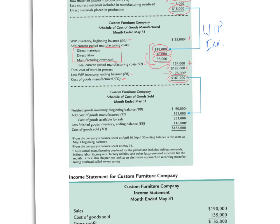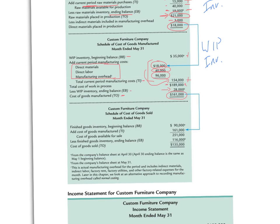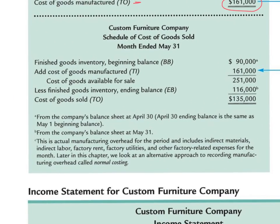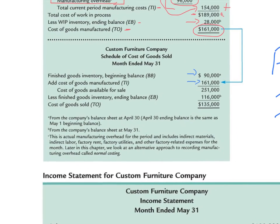Now we focus on the third schedule, which relates to finished goods inventory — the schedule of cost of goods sold. Using the same equation, we start with the beginning balance for finished goods of $90,000. We add the $161,000 calculated above — the amount transferred out of work in process into finished goods inventory. Adding $161,000 to the $90,000 already in finished goods gives us a cost of goods available for sale of $251,000.